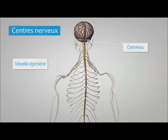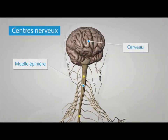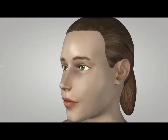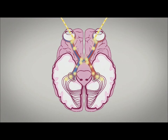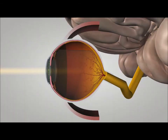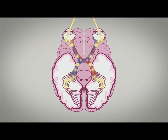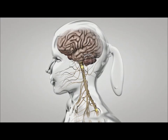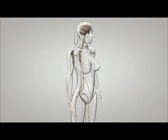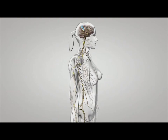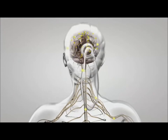Le cerveau et la moelle épinière sont des centres nerveux. Ils analysent les messages nerveux sensitifs qu'ils reçoivent. Selon l'organe sensoriel qui l'a généré, un message nerveux sensitif arrive à un endroit précis de ces centres nerveux. Par exemple, les messages issus des yeux arrivent dans la partie arrière du cerveau, les messages issus de la peau arrivent dans la partie médiane, etc. L'arrivée des messages nerveux déclenche une analyse complexe et très rapide, se manifestant par une communication intense au sein des centres nerveux.